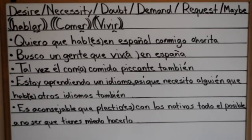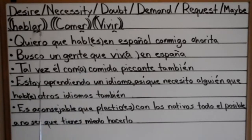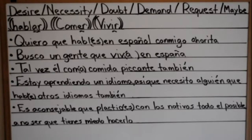Here's an example sentence: 'Quiero que hables en español conmigo ahorita' — I want you to speak in Spanish with me right now. Our verb is hablar. We change the -ar to -es: the -a becomes -e, and since I'm talking to you I add -s, giving us 'hables' not 'hablas.' So -ar becomes -es in this case.